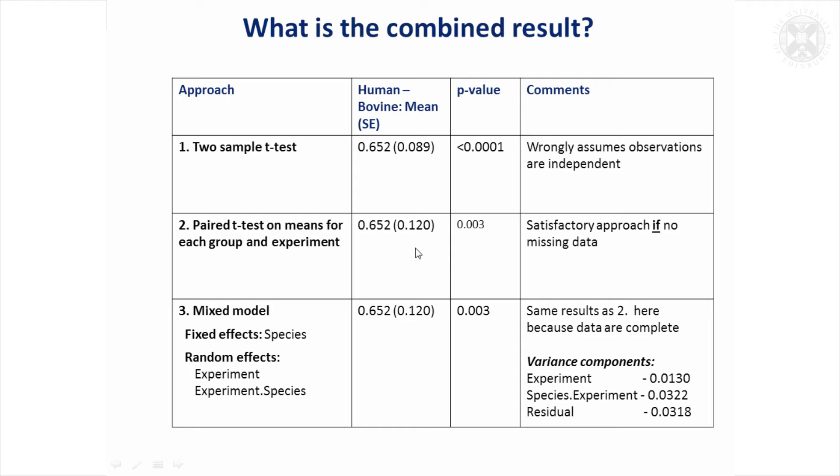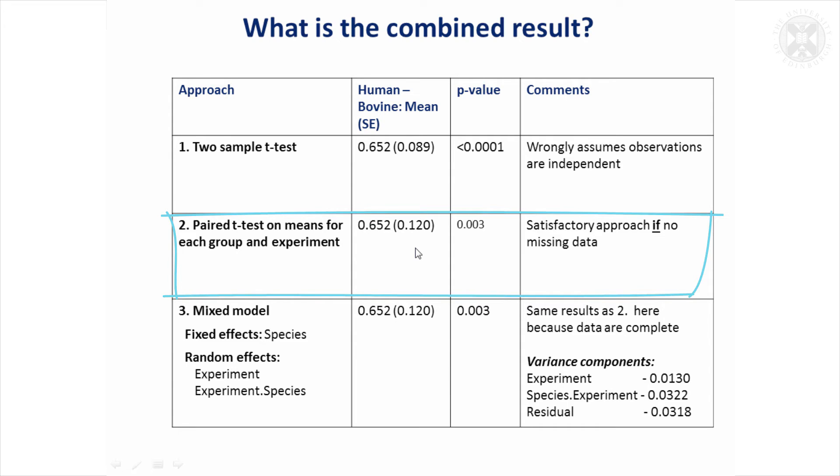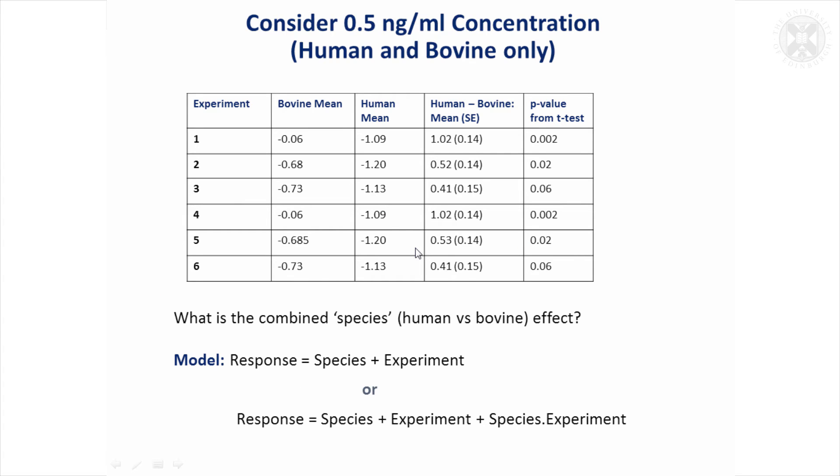So one simple approach to address that might be to take these means—we've got six here and six here—and use those to do a paired t-test. It has to be a paired t-test because they're paired within the experiment. So effectively we're taking the difference between them, and the paired t-test will be based on the differences. And if that's done, much larger, that's the standard error there of the mean difference. We still get a significant result, but it's not as significant as we had before. And that's a satisfactory approach if there's not any missing data. If you've just got one value missing at one of the experiments, that approach won't be too bad, but you'd still get some improvements fitting a mixed model.